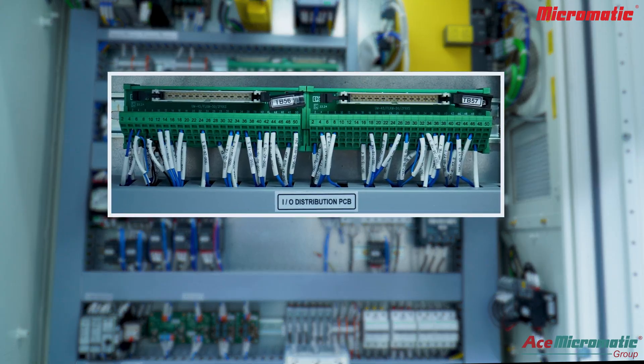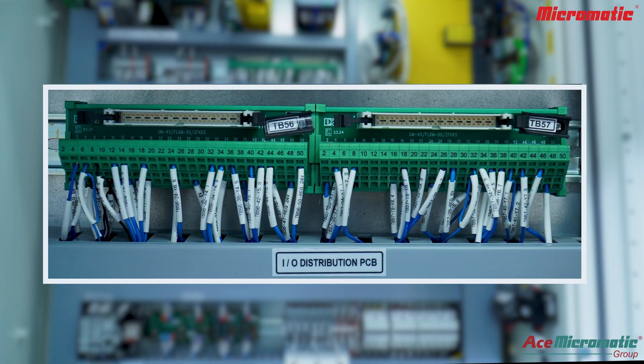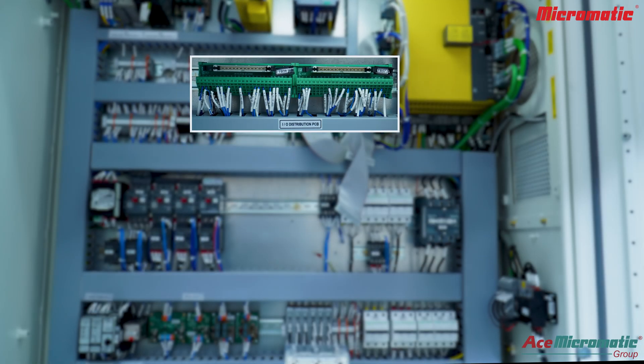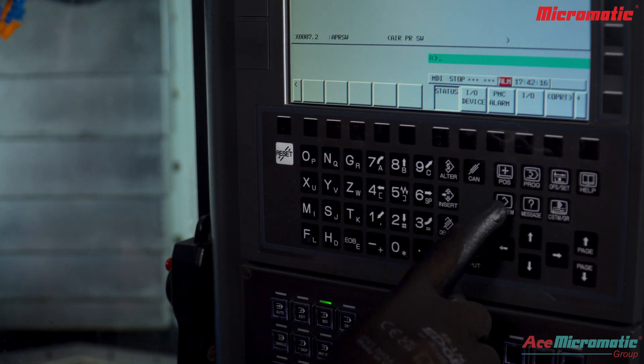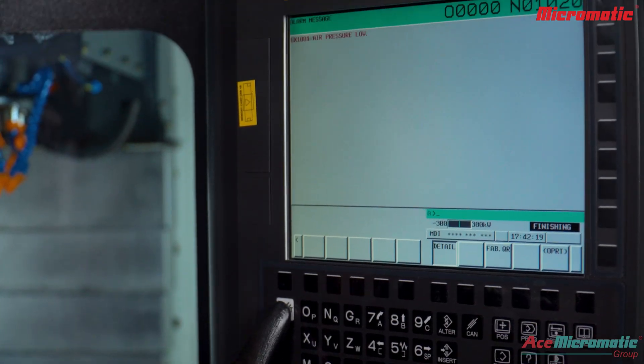Confirm pressure switch connection near terminal panel in electrical panel. When X7.2 becomes 1, the air pressure alarm will reset and normal operation will resume.